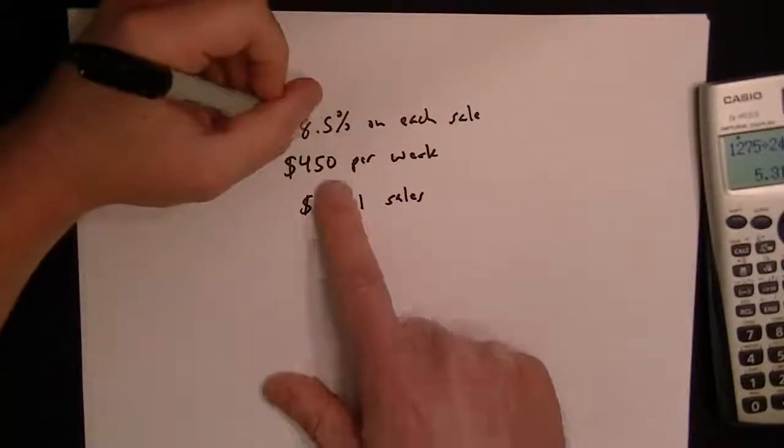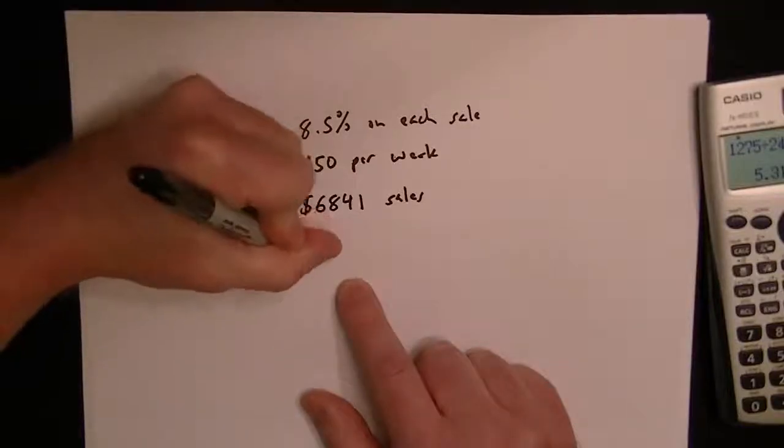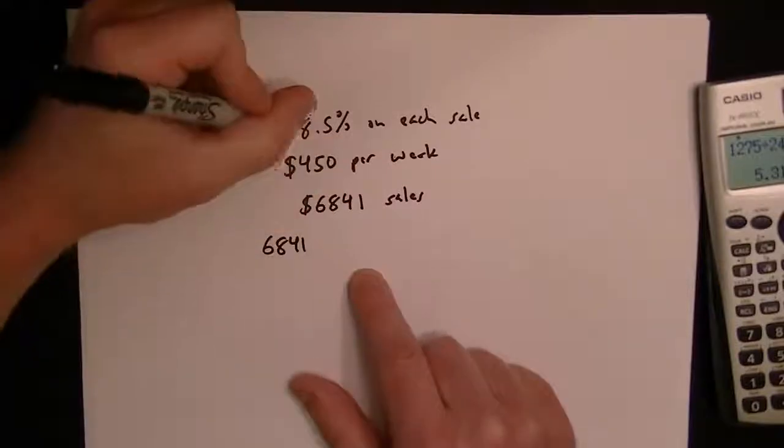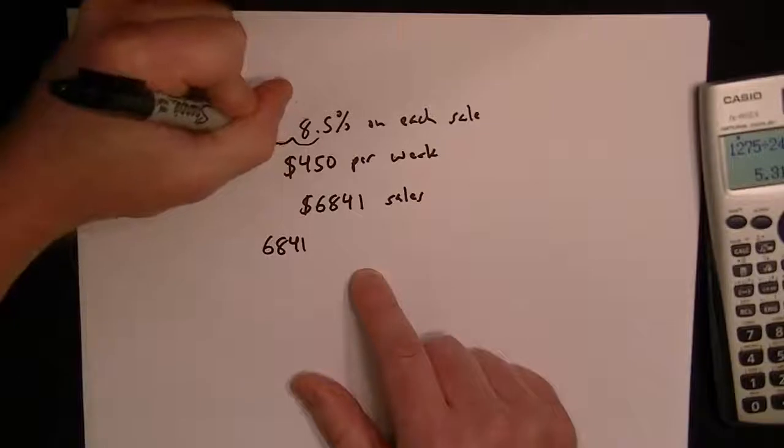So now to figure out his commission we have to use this percentage and the number of sales, so $6,841. And then to convert this into decimal, you can move the decimal over two places which is the same as dividing by 100.